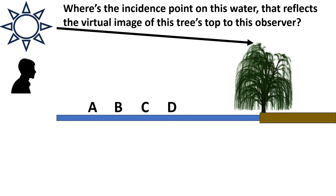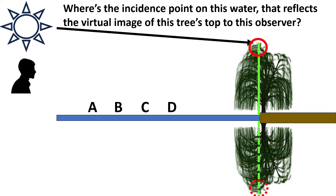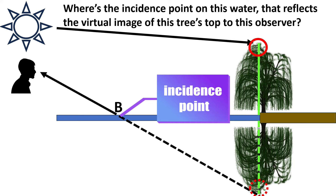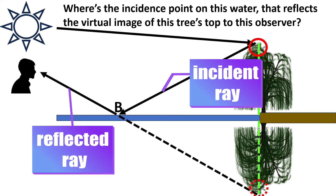This is the last practice test question. Where's the incidence point on this water that reflects the virtual image of this tree's top to this observer? To solve this, we first draw the place where the virtual image of the tree's top is, by drawing a line perpendicular to the reflective plane and selecting a location an equal distance from the reflective plane in the opposite direction. Next, we draw a line from the virtual image to the observer. That line crosses the reflective plane at the incidence point, so point B is correct. To complete the light's path, we add a ray from the top of the tree to the incidence point. As the law of reflection requires, the incident ray and reflected ray at the incidence point form a shape like a symmetric letter V.